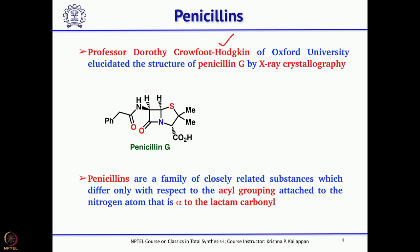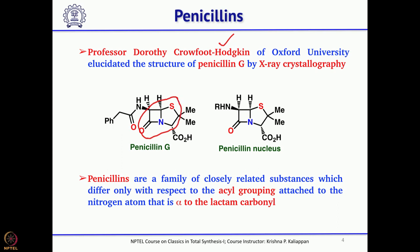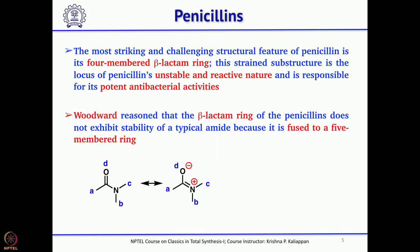If you look closely at penicillins, one core structure is the beta-lactam — the 4-membered beta-lactam fused with a 5-membered ring. This is the core structure for all penicillins. There is also an amino group adjacent to the carbonyl group, which is acylated with various acyl groups. This 4-membered lactam is quite unstable compared to normal amides or 5- and 6-membered lactams, and because it is unstable it can also react faster.